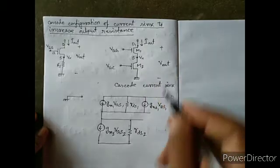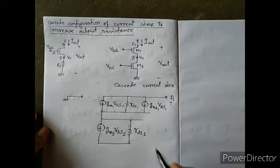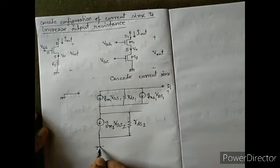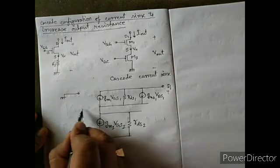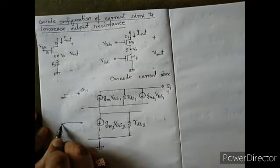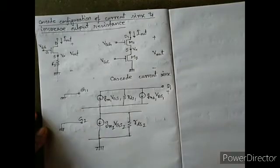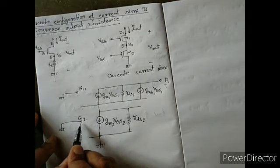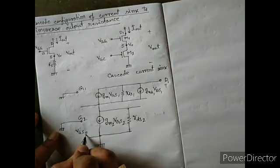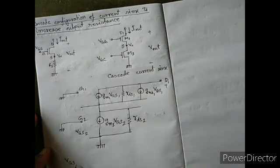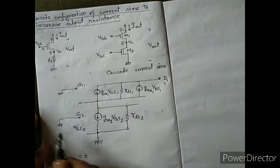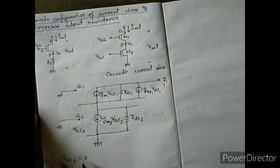The gate of M2 is connected to ground and the source of M2 is also connected to ground. Therefore VGS2 equals zero, since G2 is connected to ground and the source is connected to ground.